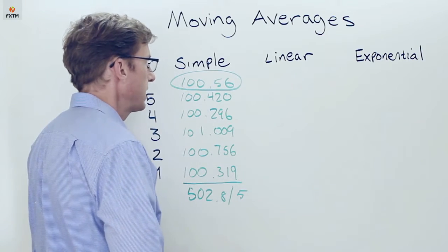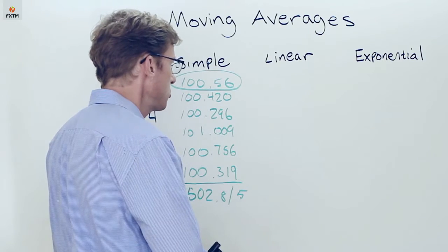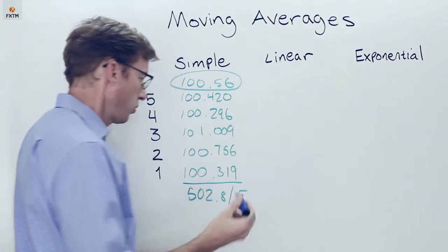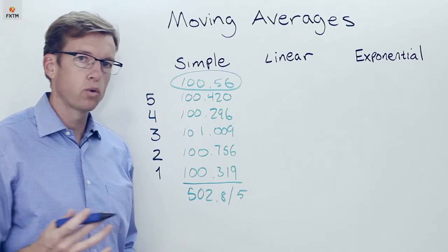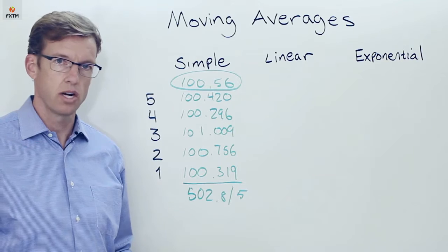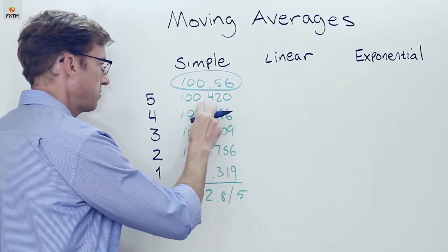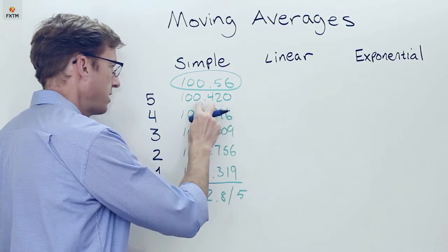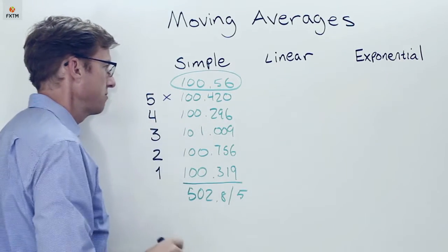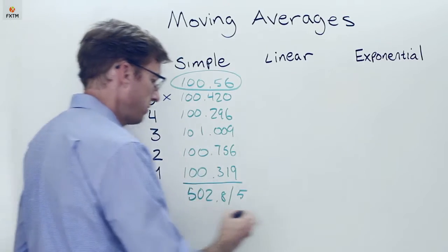So a linear weighted moving average was designed basically to try to provide signals that were a little faster. And the idea is to overweight the more recent data. So here's the way that it's constructed. Let's say that we take the data from the most recent day, which we want to have a heavier weight. We're going to then multiply that by the day's number. So in this case, that's day five. And we're going to do that for each one of these.